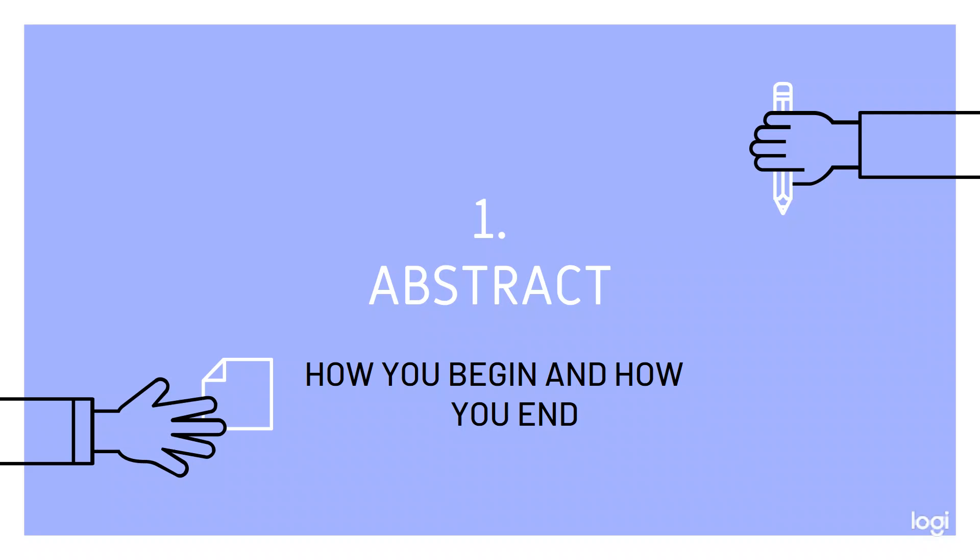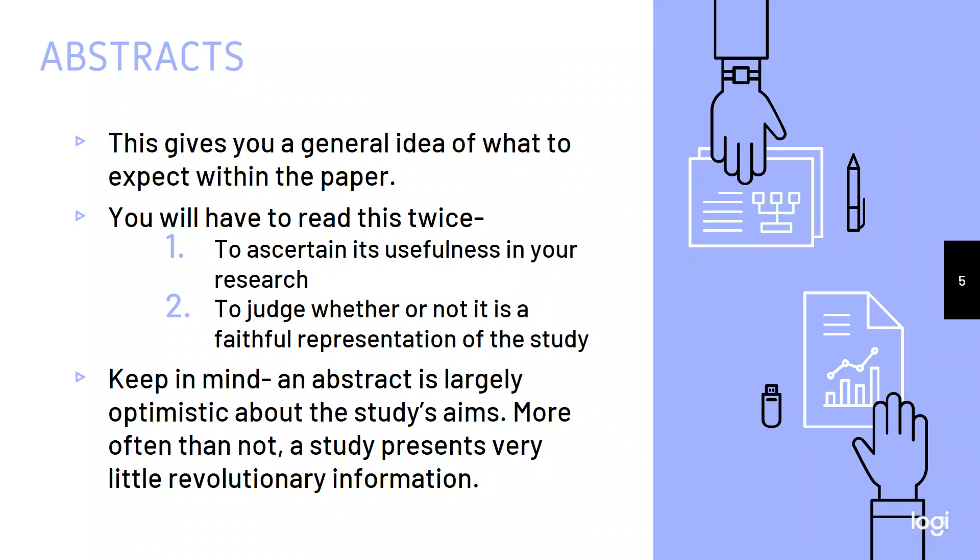So the abstract is how you begin and how you end. The abstract usually gives you a general idea of what to expect within the paper. I generally like to read a bunch of abstracts. I get a lot of research, I get a lot of articles, and then I just start reading abstracts to see what can best help me with my particular field of research. Abstracts are pretty quick. They tend to be less than 500 words, so they're usually no more than two paragraphs. So I always start with the abstract, but then once I read the entire article, I go back to the abstract to see if it was accurate at all.